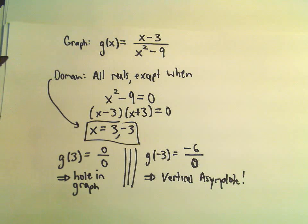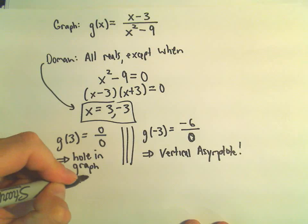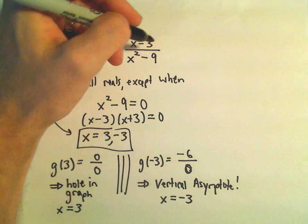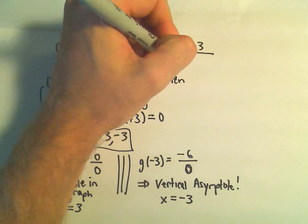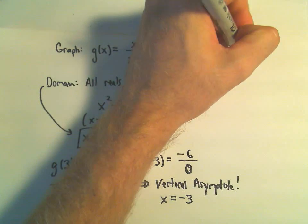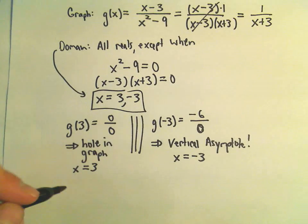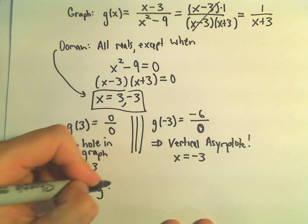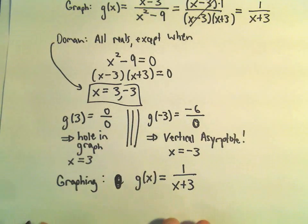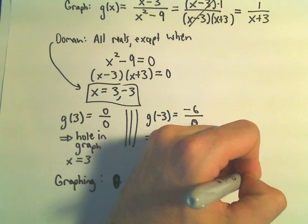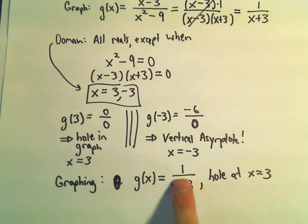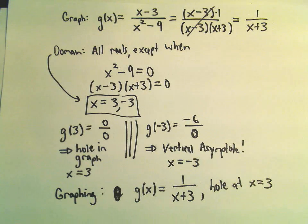So there's a hole in the graph at x equals 3, and there's a vertical asymptote at x equals negative 3. Notice our original function can actually be simplified. We have x minus 3 over x squared minus 9, and the denominator factors as x minus 3 times x plus 3. We can cancel out the x minus 3's and we're left with 1 over x plus 3. But we still have to remember that the original function is undefined at x equals 3, so there is a hole there.